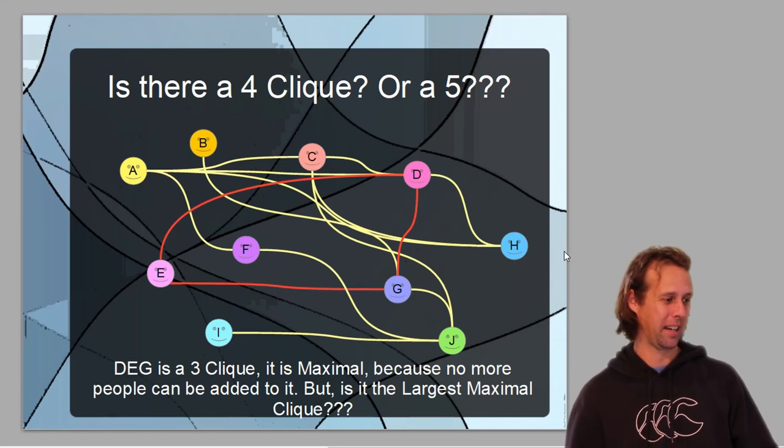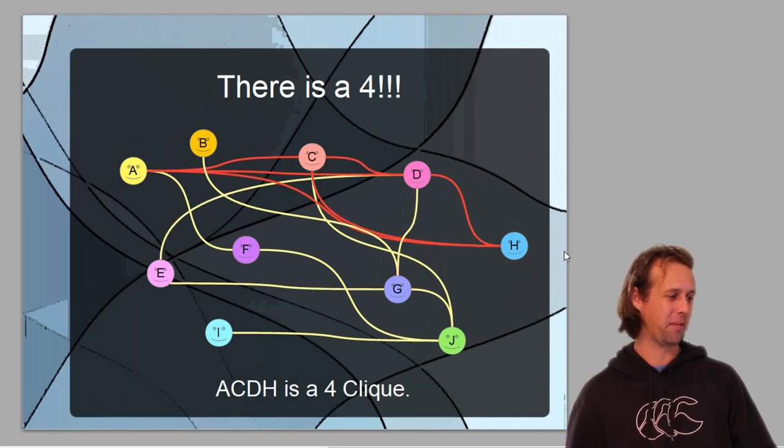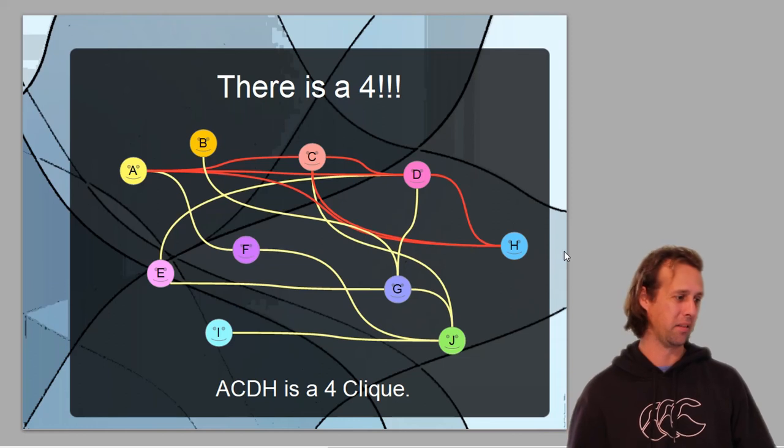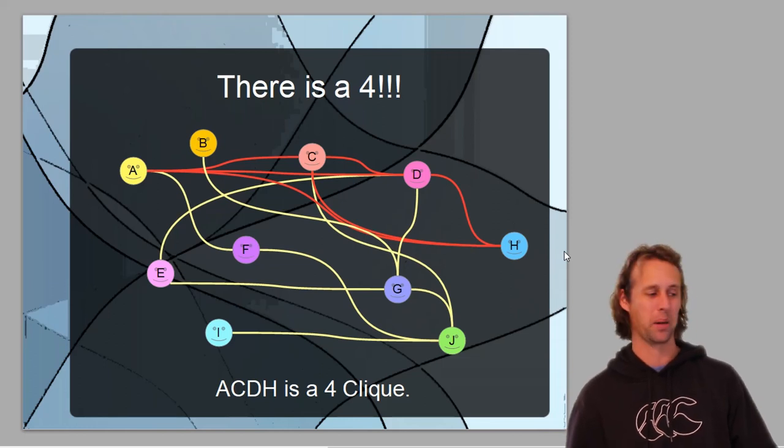It's difficult to see just by looking at it. And there it is, a four-clique. A-C-D-H is a clique of four members, all of which are friends with each other.